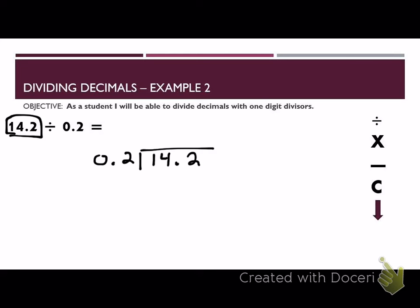We first look at our divisor. Our divisor has a decimal, so we need to move it to the wall. It takes one place because there is one digit between the wall and the decimal point. If we move it on the outside, we must also do the same thing on the inside of the house. Put it to here, and we go ahead and rise it to the top. Now that we are done, we can go ahead and divide like normal.